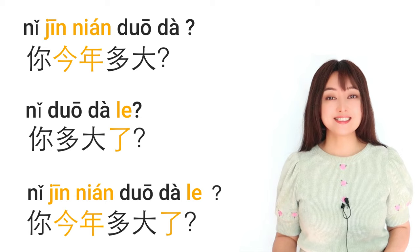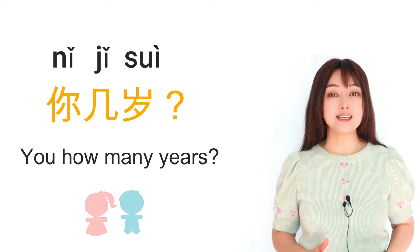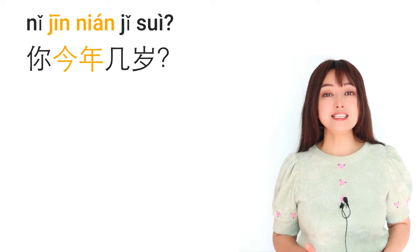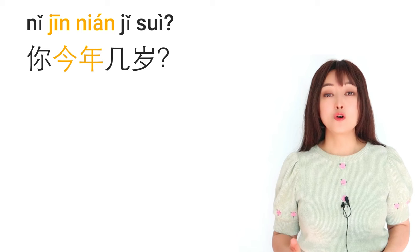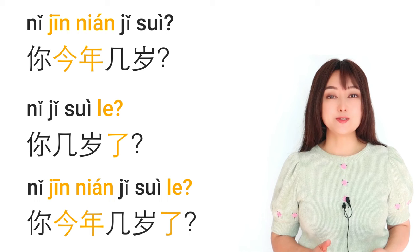Now for kids, we say 你几岁? — 'you, how many years?' 几 is used to ask 'how many' for numbers less than ten, so this form is specifically for children.